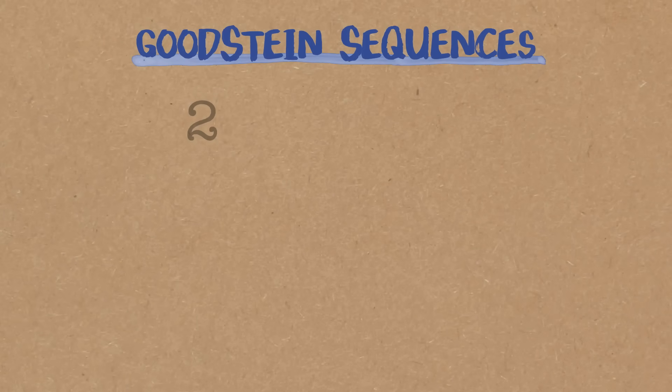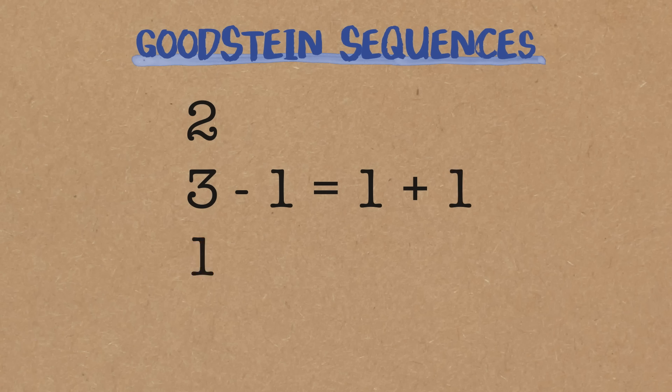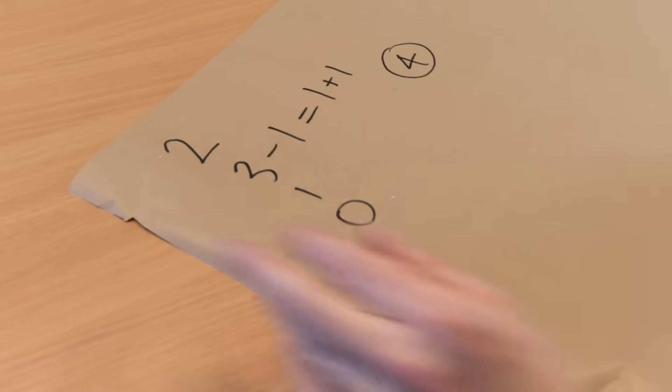Let's just do one more Goodstein sequence. So if we start with 2, it's already in base 2. Replace all the 2s with 3s and then subtract 1. Well, we're on 2 again, of course. 1 plus 1. Replace all the 3s with 4s. Well, there aren't any, so we just get to 1 and we get to 0. So you can see if we start on 2, the length is 4. We already have seen if we start on 3, the length was 6.